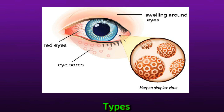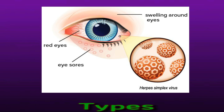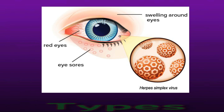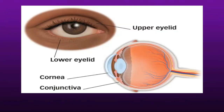Herpes type 2, or HSV-2, is a sexually transmitted form of the virus. While this type mainly causes symptoms on the genitals, it can also affect the eyes. A person will typically contract either form of the virus as a result of skin-to-skin contact with someone who already has the infection. The virus often lays dormant in the nerve cells and can travel along the nerves to the eye upon activation.